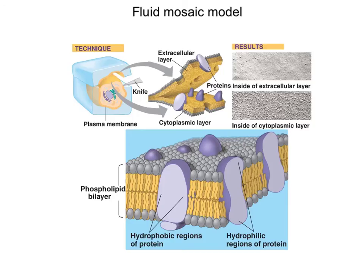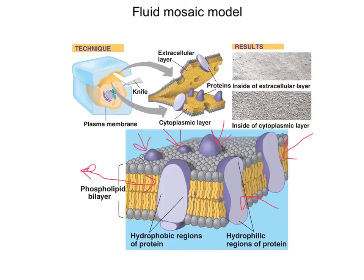The cell membrane is arranged in what's called the fluid mosaic model. Fluid in the sense that those phospholipids can move laterally throughout the cell membrane — they're not static or stuck in one place. The mosaic pattern refers to proteins being inserted throughout the membrane at various locations, like a tile mosaic. The proteins are what make these cell membranes different from organism to organism.